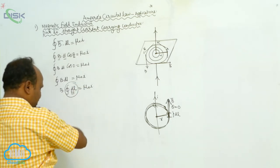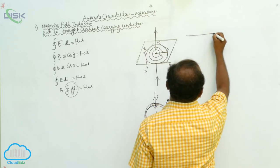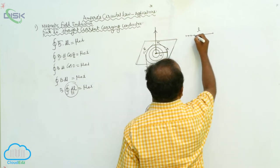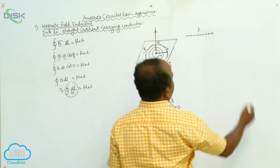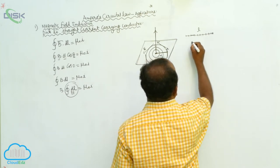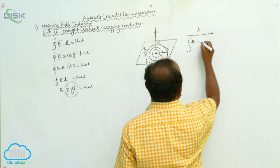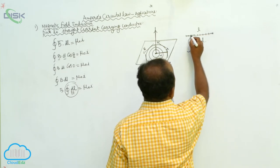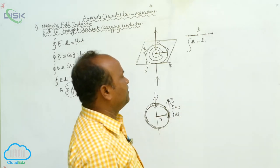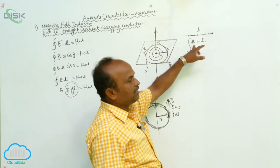The closed integral of dL: consider a wire of length L divided into a number of infinitesimal parts. There is a small length element dL. The integration of small length elements dL equals L — by adding all the length elements you get the total length L.